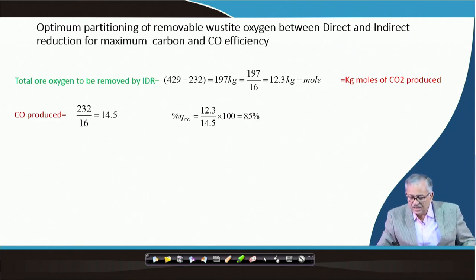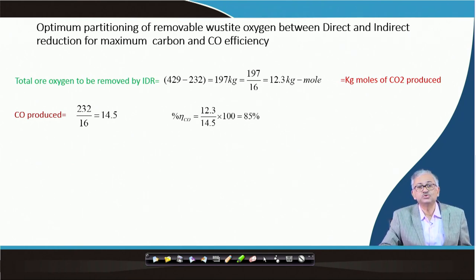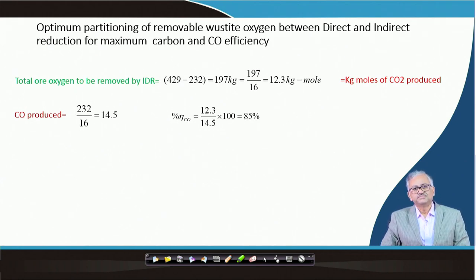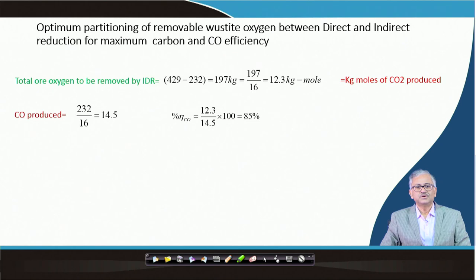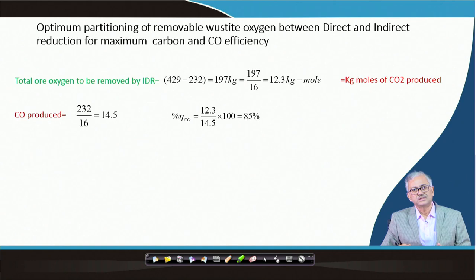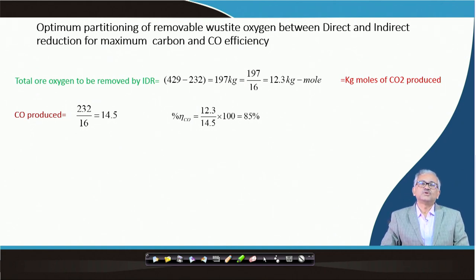So CO efficiency has gone to 85%, whereas if only FeO is reduced indirectly — 100% indirect reduction — efficiency is only 30%. If we combine direct and indirect reduction for wustite iron, and carry out higher oxide oxygen removal with left-over CO from FeO reduction, then your efficiency can go up to 85%. The two things to optimize are direct and indirect reduction percentages.